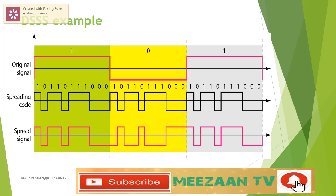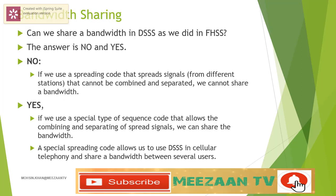DSSS can also provide immunity against interference if each station uses a different code. Can we share a bandwidth in DSSS as we did in FHSS? If we use a spreading code that spreads signals that cannot be combined and separated, we cannot share a bandwidth. For example, some wireless LANs use DSSS and the spread bandwidth cannot be shared. However, if we use a special type of sequence code that allows the combining and separating of spread signals, we can share the bandwidth. A special spreading code allows us to use DSSS in cellular telephony and share a bandwidth between several users.